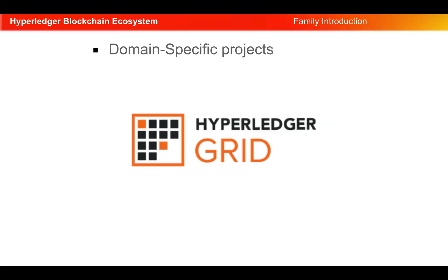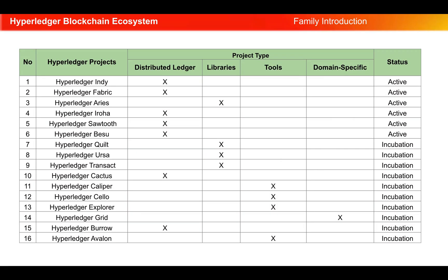Next, we have domain-specific projects. Hyperledger Grid is one of the domain-specific projects in the Hyperledger ecosystem and it intends to provide reference implementations of supply chain solutions. This slide shows all the Hyperledger projects under the categories of distributed ledger, library, tools, and domain-specific, and you can also see their status — whether they are already active or still in incubation state.